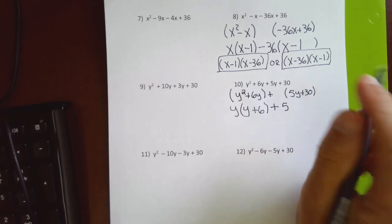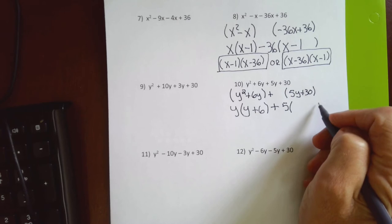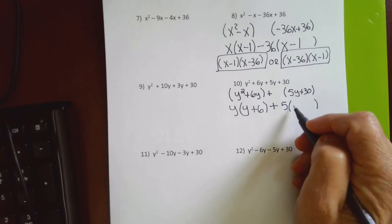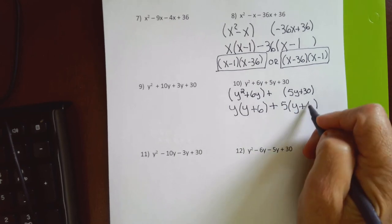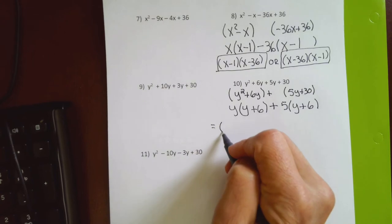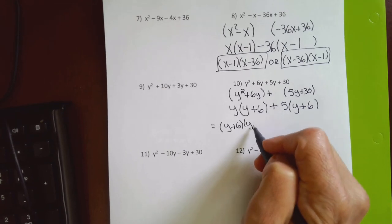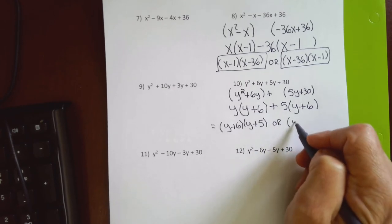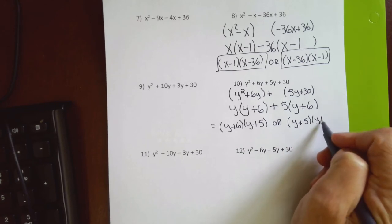I'm not flipping any signs because I didn't factor out a negative. I divide 5 by 5 to get y, and 30 ÷ 5 = 6. I have the common parenthesis, so the answer is either (y + 6)(y + 5) or (y + 5)(y + 6) — both are correct.